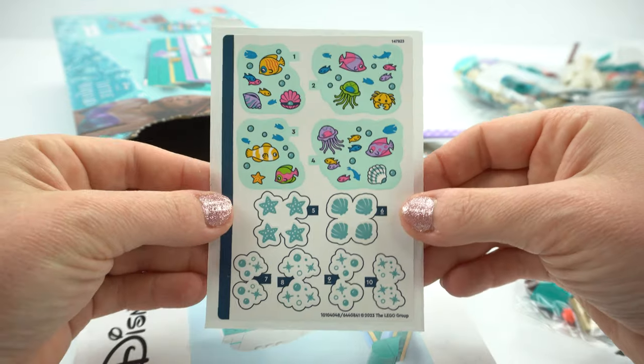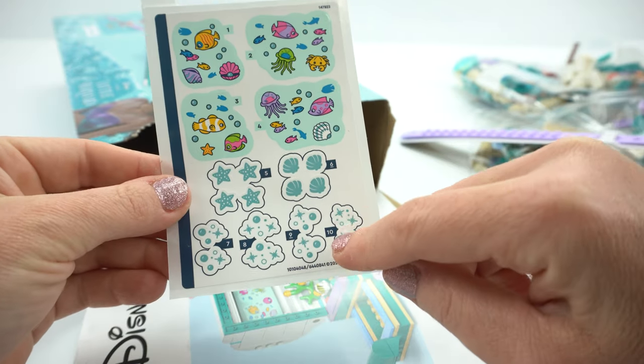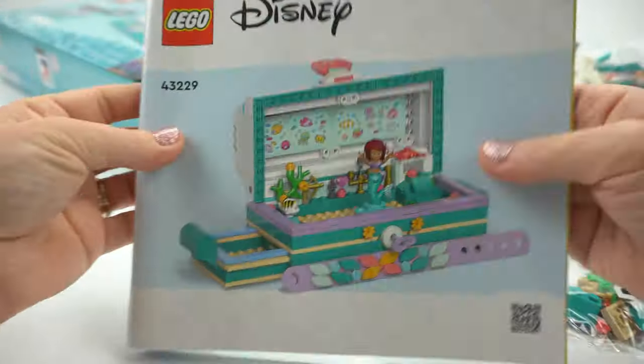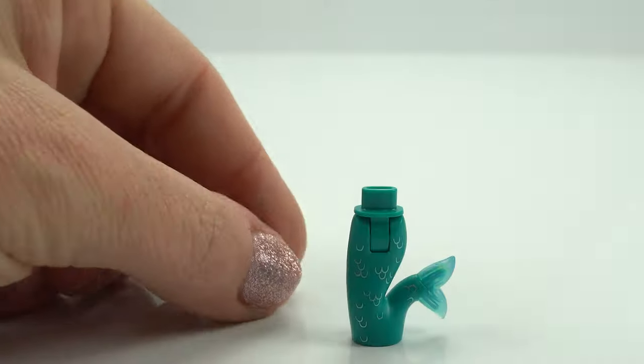We've got some stickers here. The numbers are great, very helpful. Thanks Lego. And then we've got our instruction booklet here. Beautiful clear pictures. So let's get to it. We'll start here with Ariel.